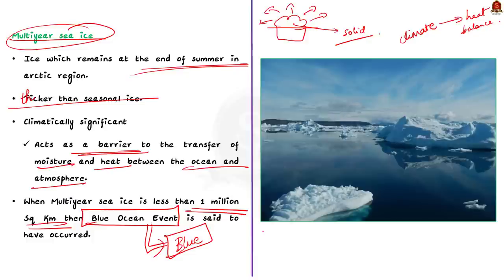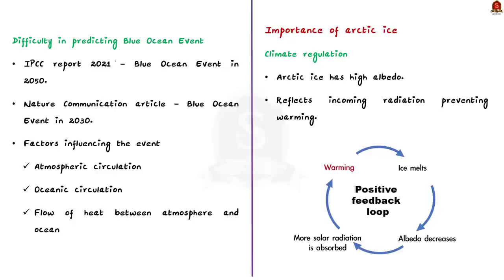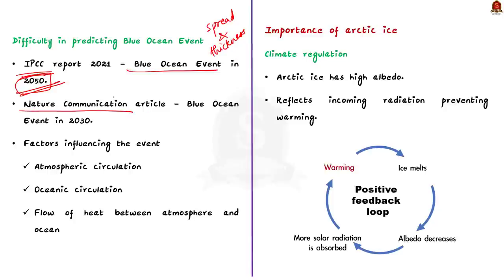We will see why predicting the Blue Ocean event is a difficult task. The Arctic region has been experiencing a significant decline in sea ice, both in terms of spread and thickness over the past few decades due to rising global temperatures. As greenhouse gas emissions continue to increase, it further contributes to the warming of the planet, which accelerates the melting of Arctic sea ice. The IPCC report published in 2021 predicted the Blue Ocean event will happen around 2050, but a recent study published in Nature Communications stated it will happen by 2030, even if we take our best measures to control climate change.